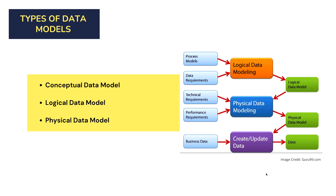The conceptual data model defines what the system contains. This model is typically created by business stakeholders and data architects, and its purpose is to organize, scope, and define business concepts and rules — it is a very high-level data model. The logical data model defines how the system should be implemented regardless of the DBMS, and is created by data architects and business analysts to develop a technical map of roles and data structures. The physical data model describes how the system will be implemented using a specific DBMS, and is created by DBAs and developers for the actual implementation of the database.